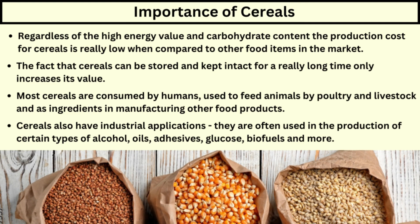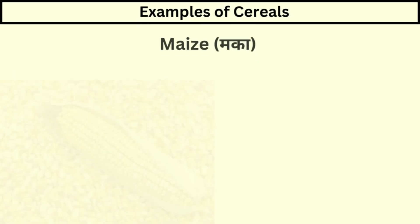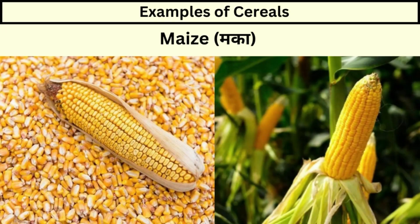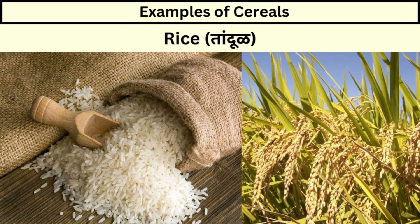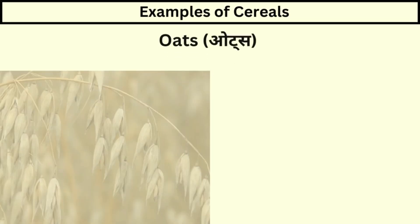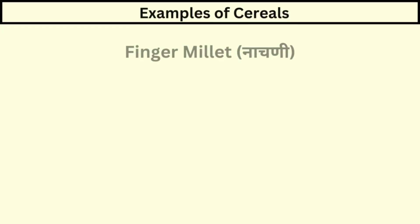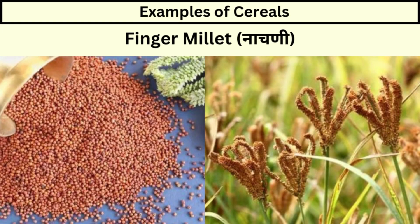Cereals also have industrial applications. They are often used in the production of certain types of alcohol, oils, adhesives, glucose, biofuels, and more. Examples of cereals include wheat, maize, rice, barley, oats, pearl millet (Bajra), finger millet (Nachni), etc.